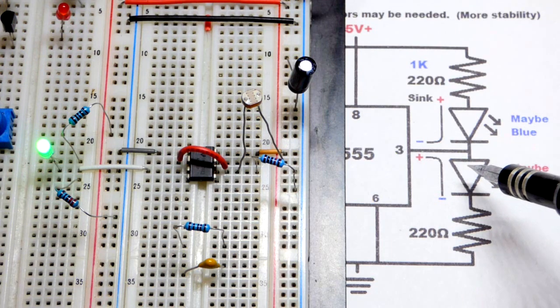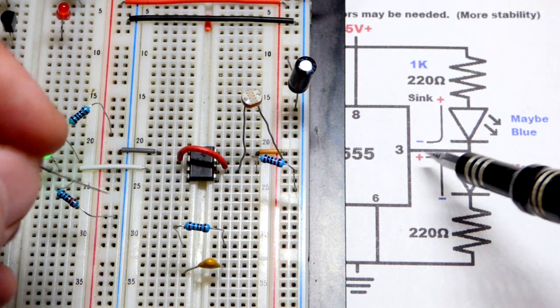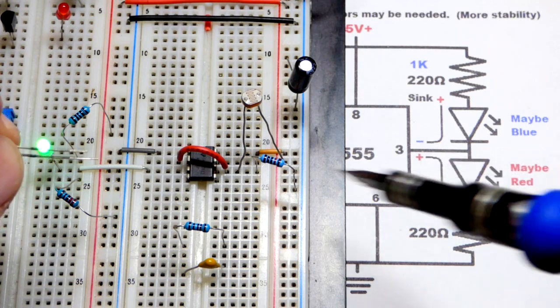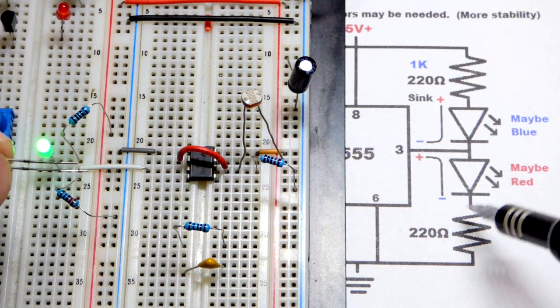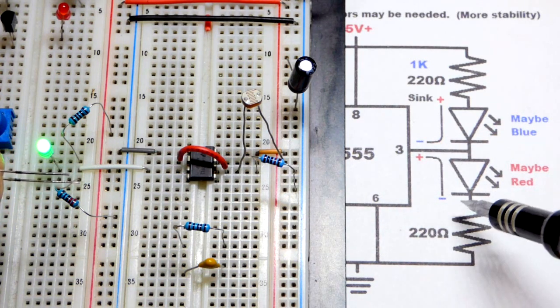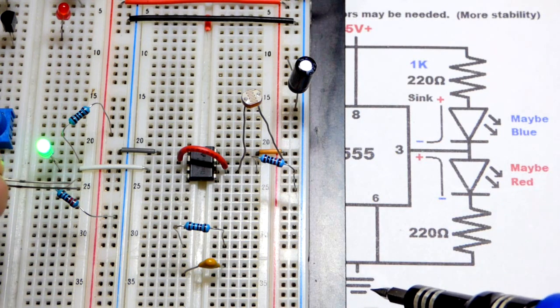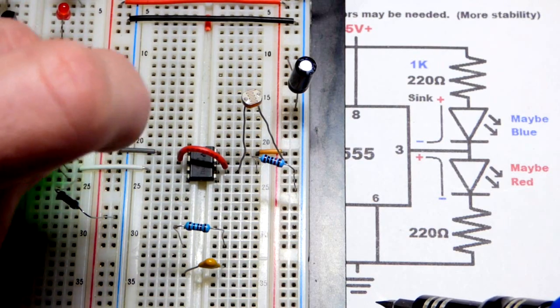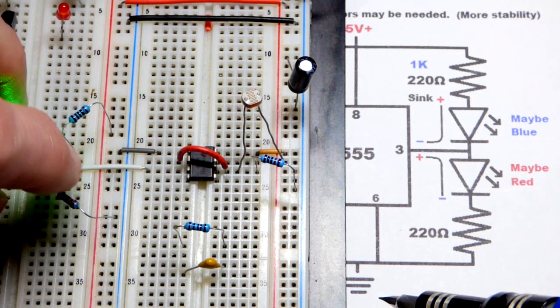The red LED will take the long lead, the anode, so we know the output is high because the anode is to pin 3 right there. The other side of the LED, the cathode and the lower value resistor, go to the negative rail.